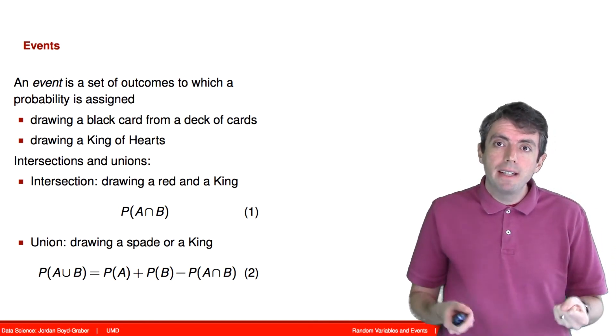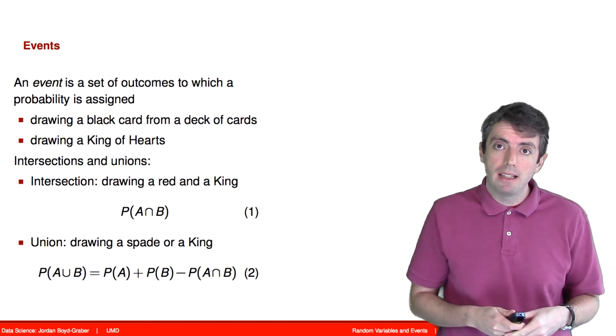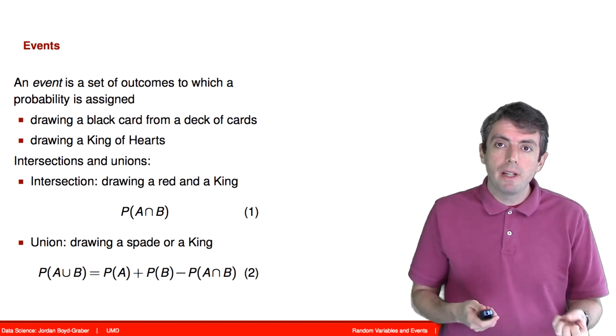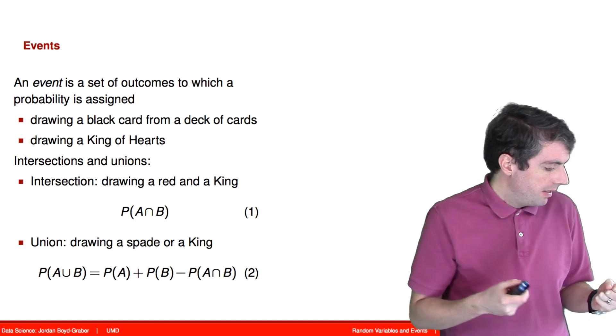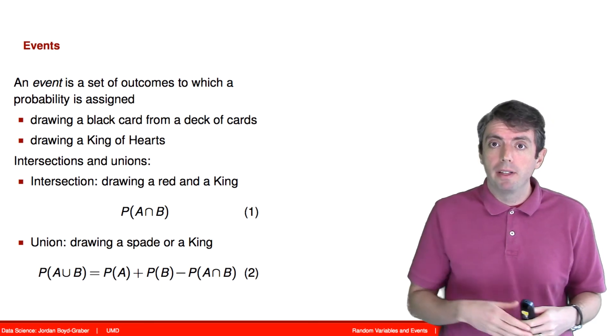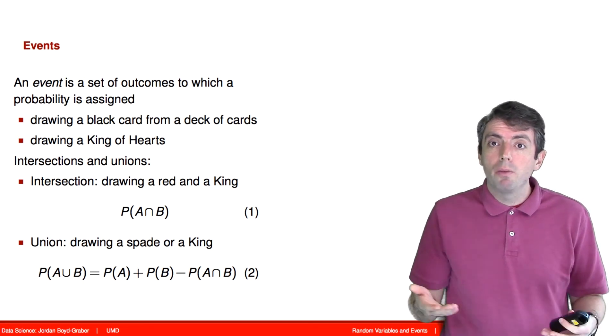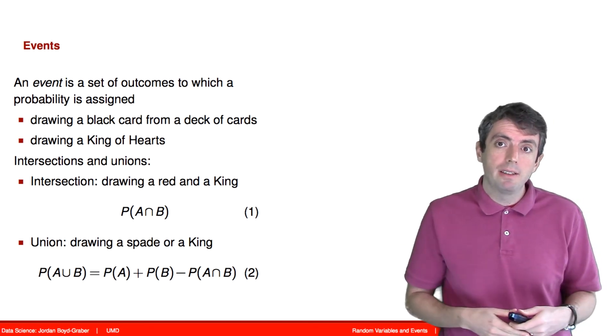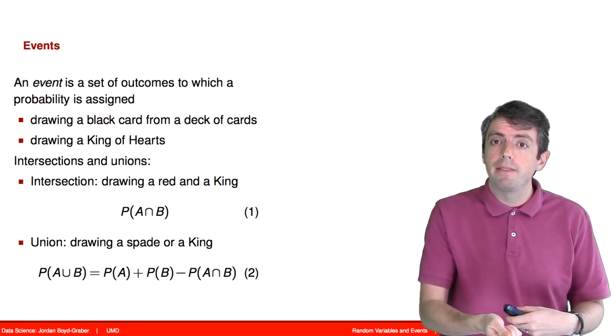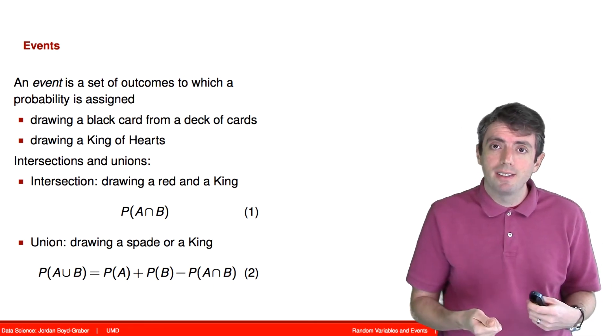When we talk about events, events are a set of outcomes to which we want to assign some probability. And often we describe these events in word form. So for example, we can say drawing a black card from a deck of cards. That is one possible event from a probabilistic outcome. Drawing a king of hearts is another probabilistic event. And often we will want to compute the probabilities of these events. To compute these probabilities, we will need to use operations on events. Two of the possible operations that we'll talk about are intersections and unions.